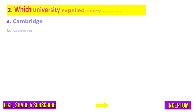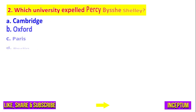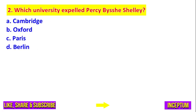Question number 2. Which university expelled P.B. Shelley? And in the options we have: Cambridge, Oxford, Paris, Berlin.